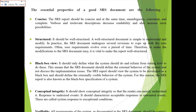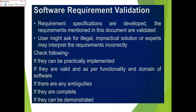The essential properties of a good SRS document include being structural, having a black box view, being conceptual, unambiguous, and free of redundancy. Validation is a quality assurance step in which the requirements specifications are checked. It verifies whether the requirements can be practically implemented, whether they are valid per functionality, whether there are any ambiguities, whether there is no redundancy, whether they are consistent, complete, and whether they can be demonstrated.